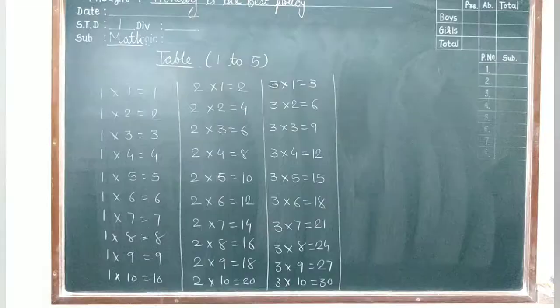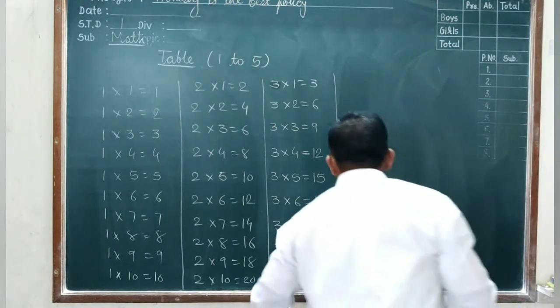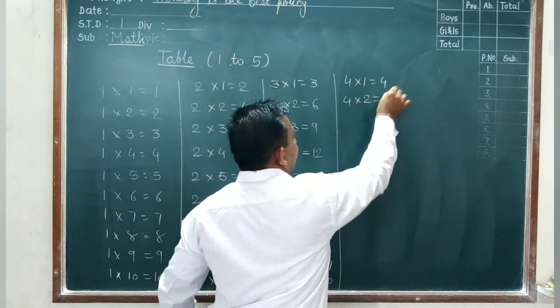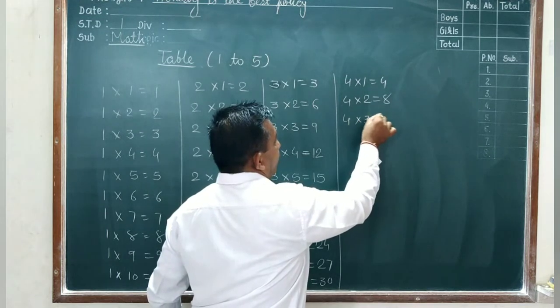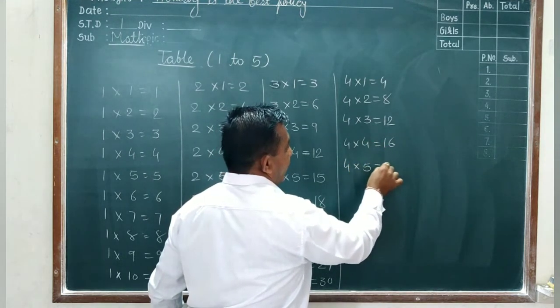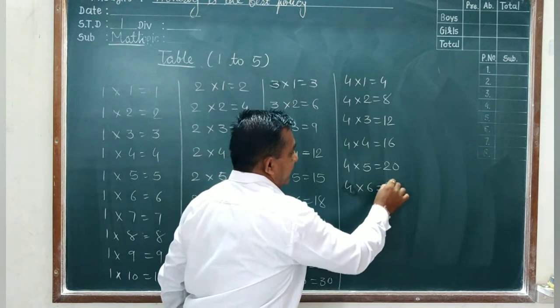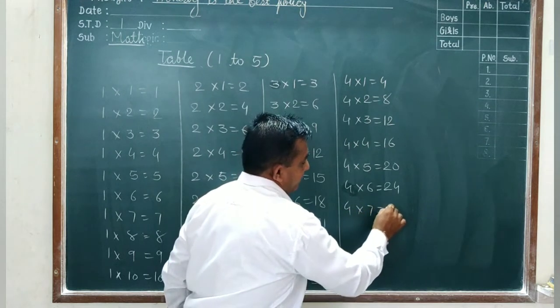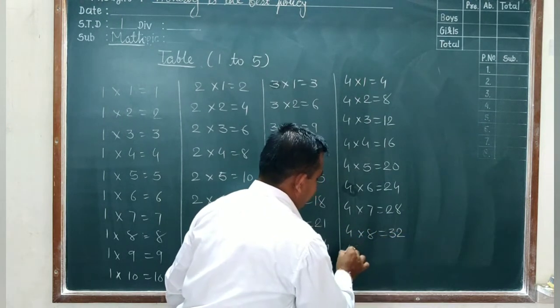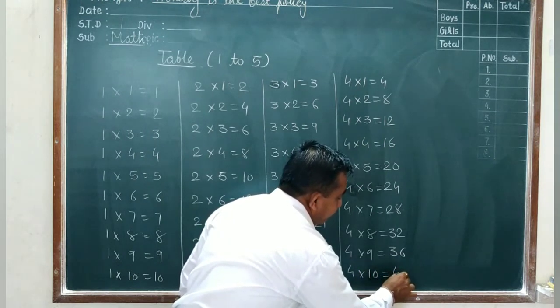Now table 4: 4 ones are 4, 4 twos are 8, 4 threes are 12, 4 fours are 16, 4 fives are 20, 4 sixes are 24, 4 sevens are 28, 4 eights are 32, 4 nines are 36, and 4 tens are 40.